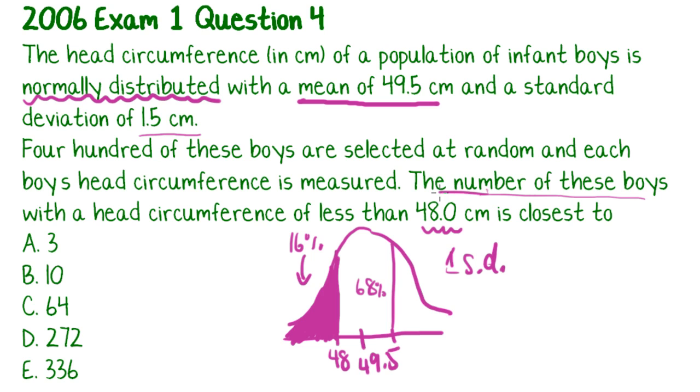So I've got 16% of all the boys have a head circumference of less than 48. But I want to know the number of those boys. There are 400 in total, they're selected at random and measured. So if there's 400 total, I want to know 16% of 400 to work it out. So you just do that on the calculator.